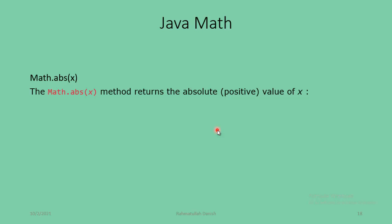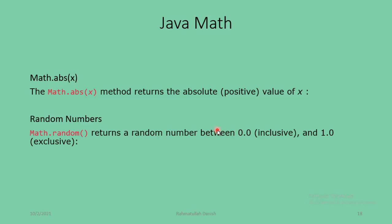Another method is math.abs(x) in the Java Math class. The math.abs method returns the absolute positive value of x. When we pass a negative value into this method, it returns the absolute positive value of the passed value. Random numbers is also a Java Math class method.